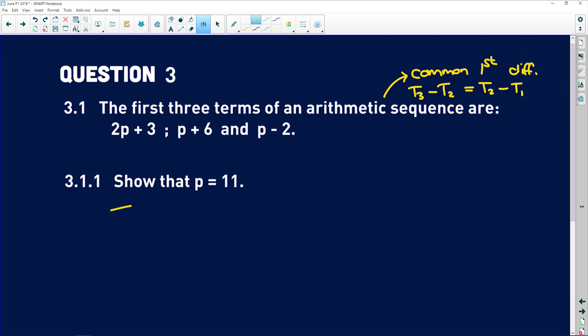So if I do just that, I can solve for p. Term 3 is p minus 2. Term 2 is p plus 6. Again, term 2, p plus 6, minus term 1, which is 2p plus 3.